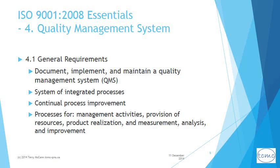Clause 4 deals with the requirement for there to be a quality management system, or QMS as it is commonly referred to. Clause 4.1 requires that the QMS be documented and implemented in the form of a system of integrated processes, which shall be continually monitored for opportunities to be improved. These processes shall cover all essential organizational functions such as management activities, product or service realization, and the provision of necessary resources to that end.